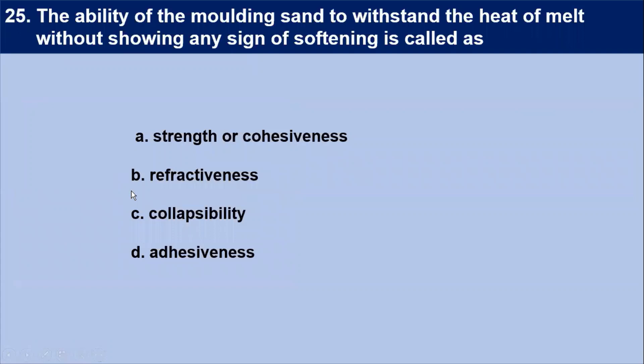Next question: the ability of molding sand to withstand the heat of melt without showing any sign of softening is called — this is refractoriness. Refractoriness of a molding material is defined as the ability of a material to withstand the high temperature of the molten metal. Our answer is B — refractoriness.